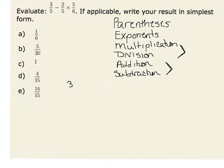Therefore, in our numerical expression, 3/5 minus 2/5 times 5/6, we will recognize that we have to do multiplication before subtraction.